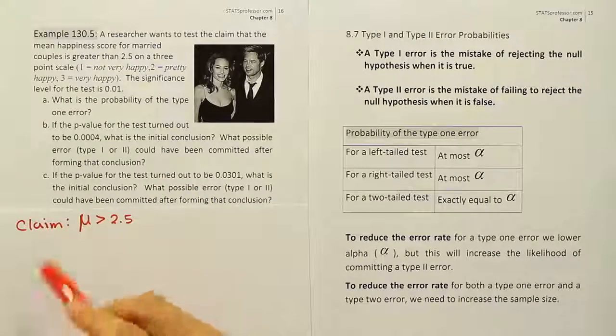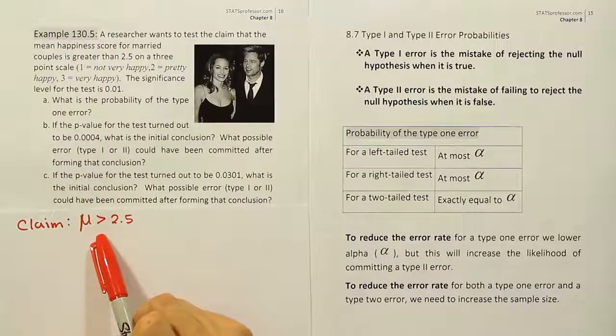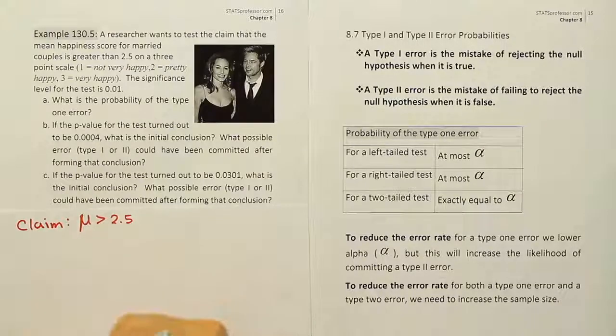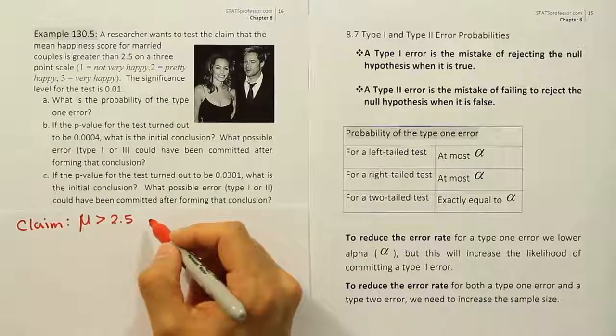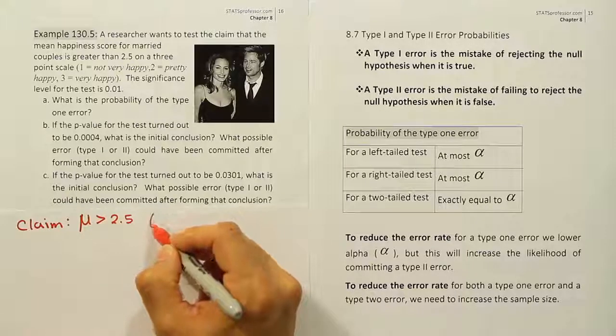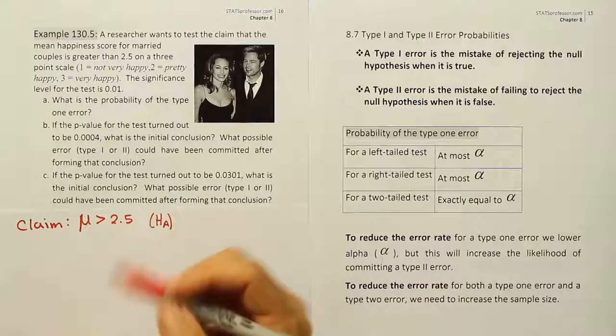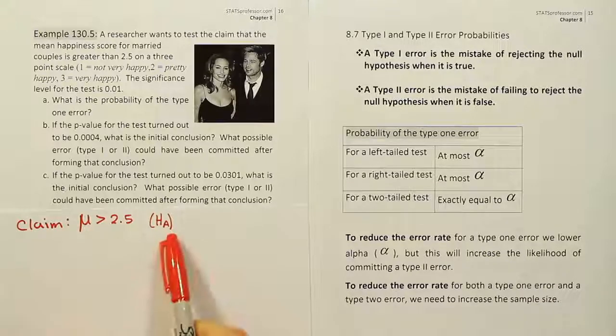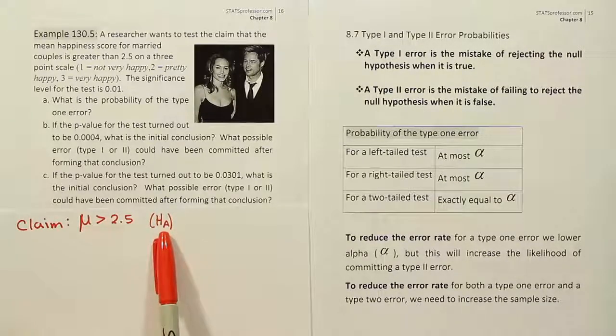Now, that claim happens to have a greater than symbol, which means it also happens to be HA. So isn't this also HA as well as the claim? The reason why that is important is because it is HA that tells us what kind of test we're conducting.